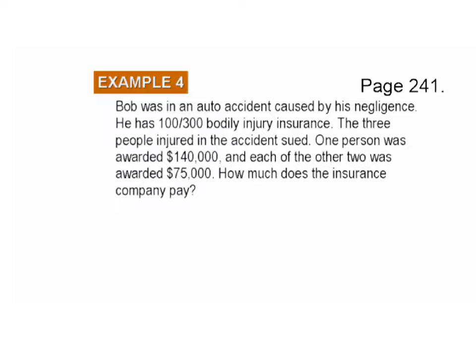Here's Example 4 from page 241. Bob was in an auto accident caused by his negligence. He has 100/300 bodily injury insurance. Three people injured in the accident sued: one person was awarded $140,000, and each of the other two were awarded $75,000. The insurance company only pays up to $100,000 per person, so for the first person they pay $100,000. Since $75,000 is under the $100,000 limit, they pay the full $75,000 for each of the other two.